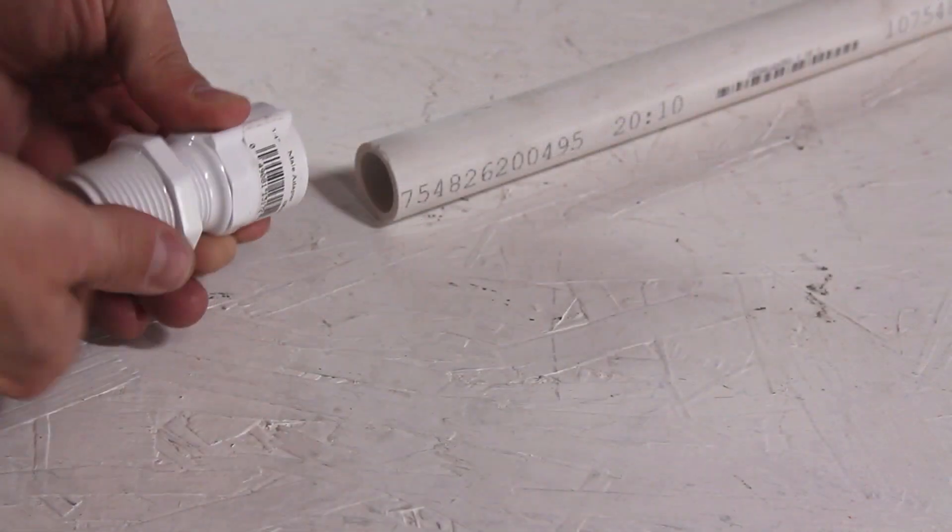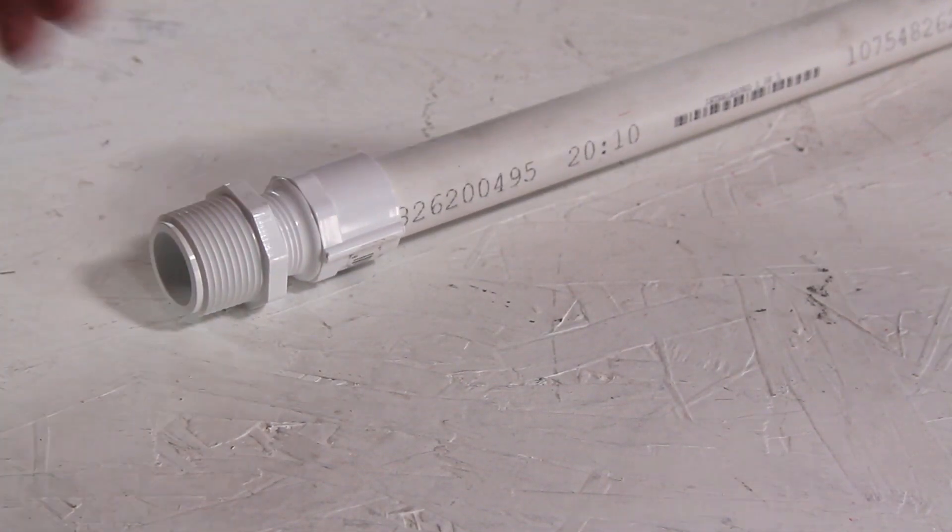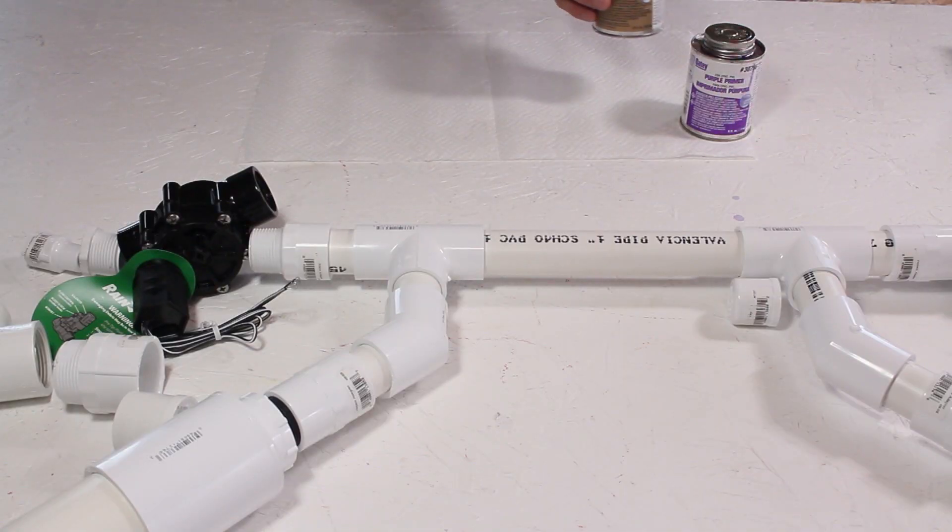I'm happy with the look so let's cut a 2 foot length of 1.5 inch pipe for the barrel, and commit to this design by making it permanent.